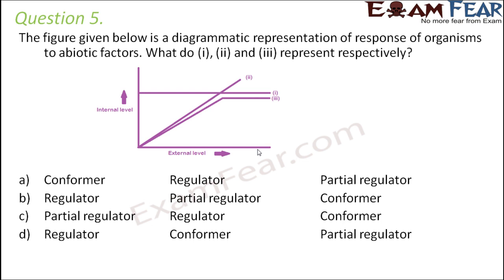Now in case of a regulator, the internal temperature is independent of the external temperature — that is, there is constant homeostasis happening. Looking at the graph, the straight line marked as 1 represents the regulator, because the internal temperature always remains at the same level regardless of the increasing external temperature.